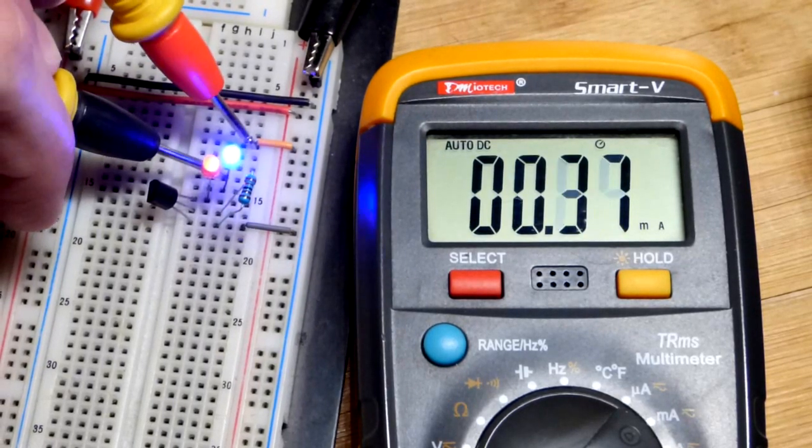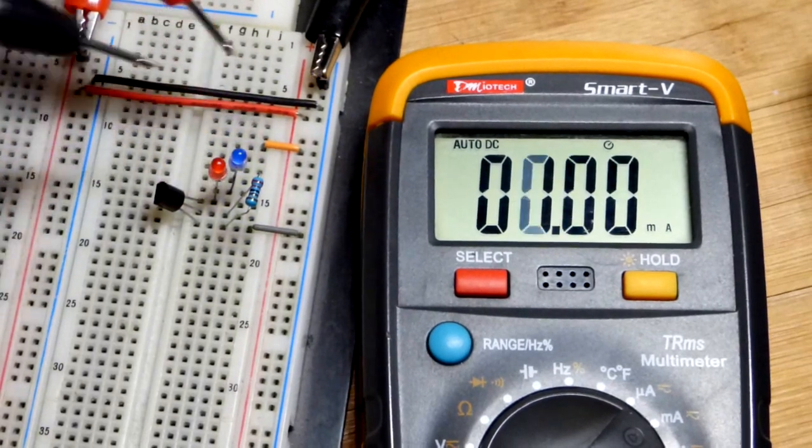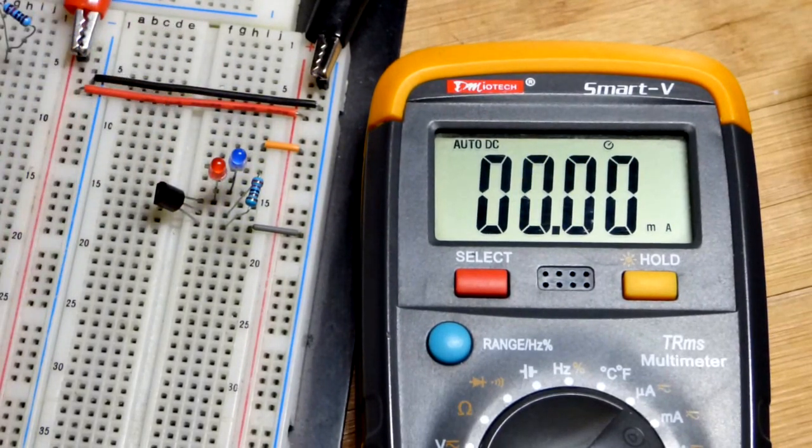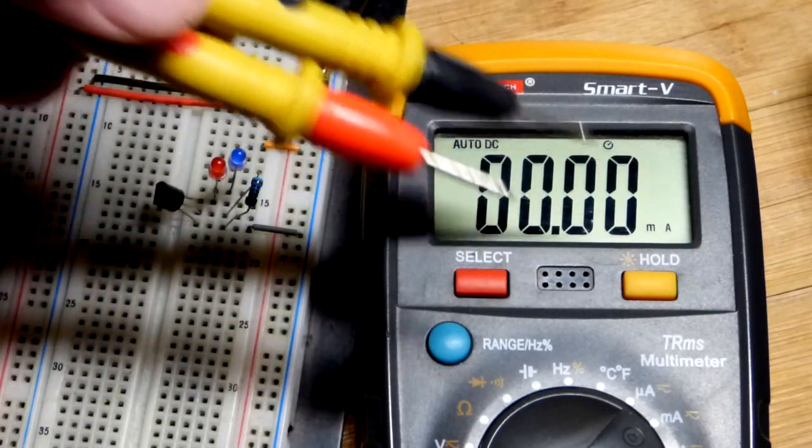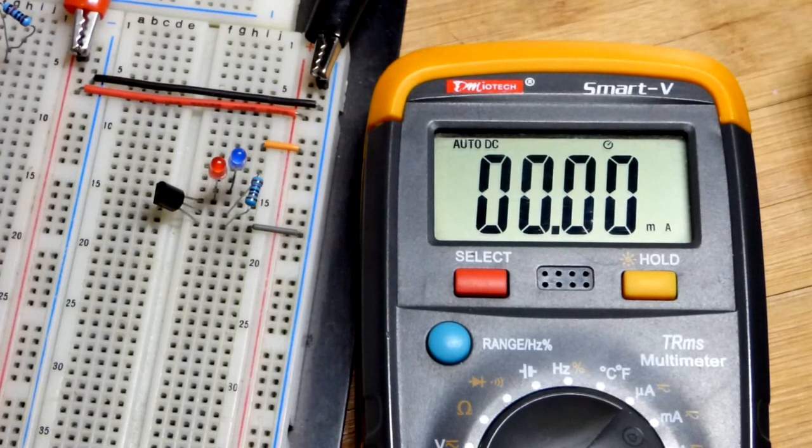And there you can see, current went down a tiny bit. But we added a lot more voltage drop. And so we added a considerable amount more to the load. But the current held pretty close to the same.